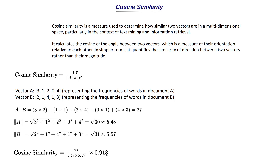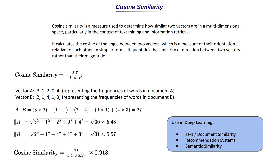The cosine similarity score ranges between 0 and 1. If the score is 1, the two vectors are very close to each other. If the value is small, they are far from each other and quite different. This concept of cosine similarity can be used in text and document similarity as just discussed, and it can also be used in recommendation systems.